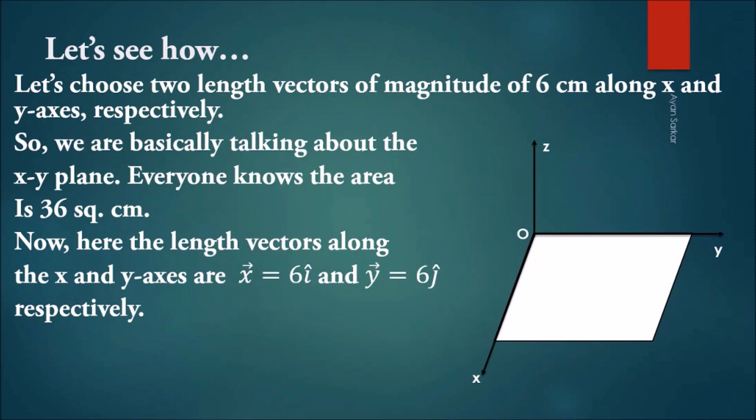Now let's consider the length vectors along the axes. The x vector is x⃗ = 6î and the y vector is y⃗ = 6ĵ.